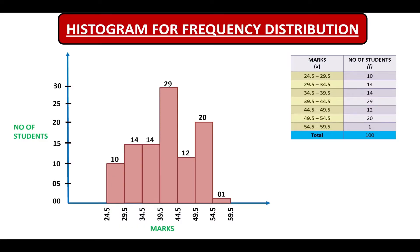In the last video we had seen what is a histogram. So if we observe the histogram, we can easily infer that 29 students have scored between 39.5 to 44.5 marks.